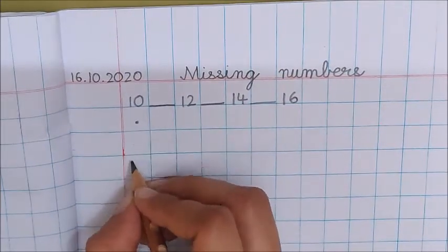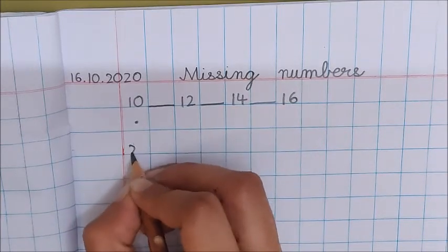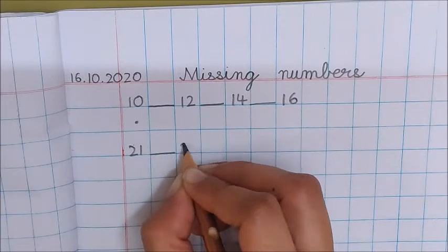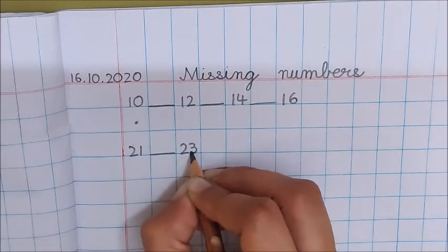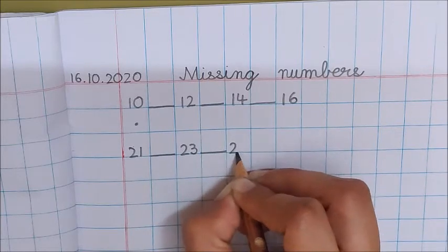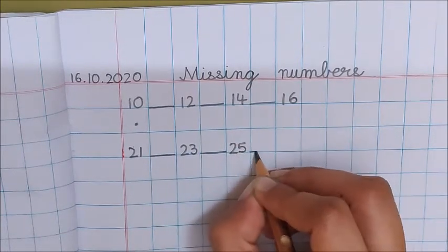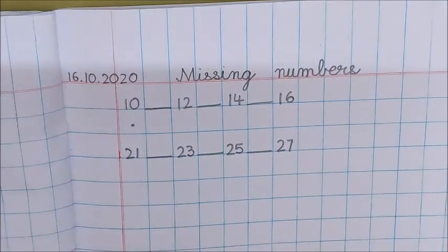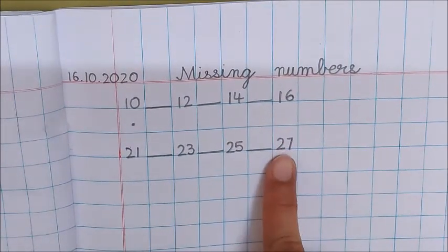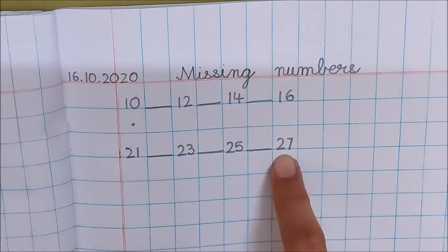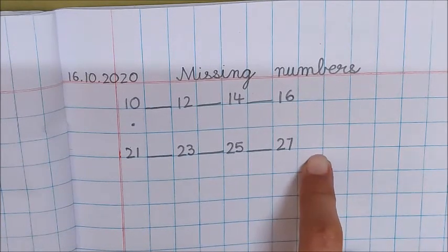Now in the next row write down 21, dash, 23, dash, 25, dash, 27. See, I am writing this number in one box and not like two here and seven in the next box. It is in one box. Now below 21 put a dot.